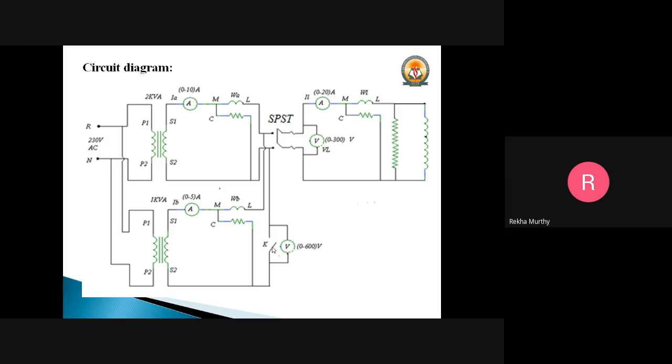Loading will be continued in steps of 2 amperes by varying both the resistive and reactive loads. Care should be taken in such a way that the ammeter which is connected to the secondary should not exceed the rated current of the corresponding transformer.